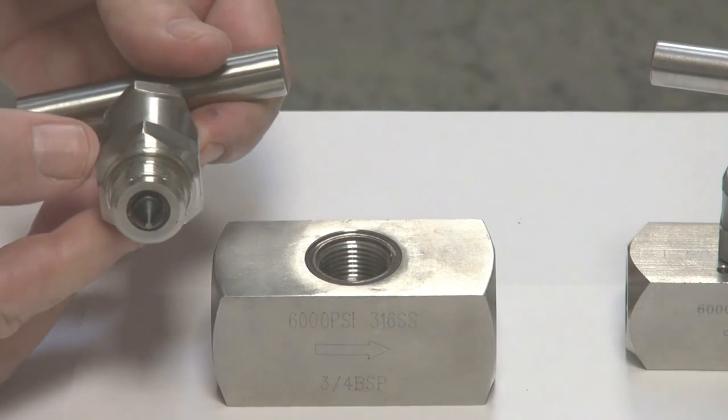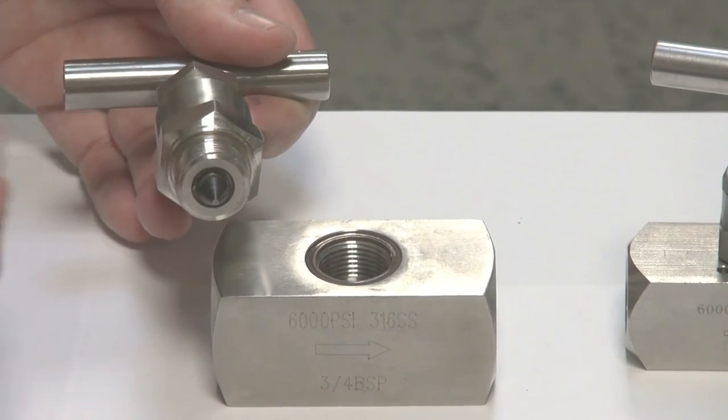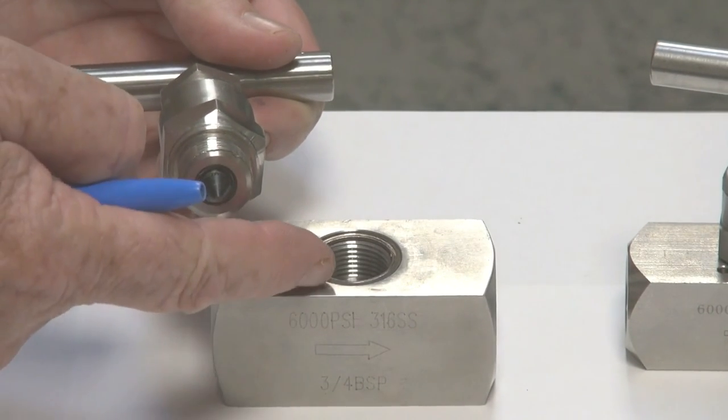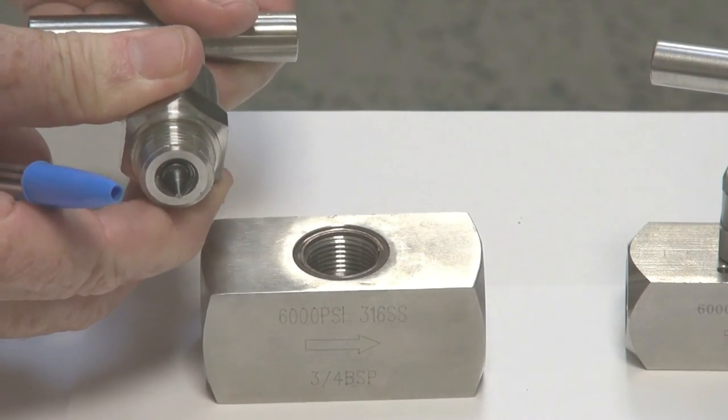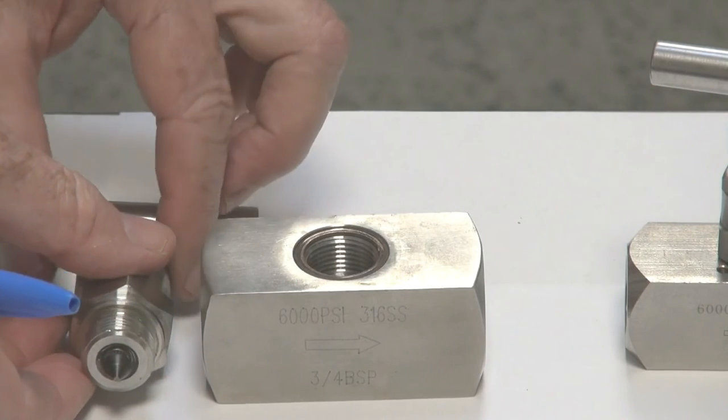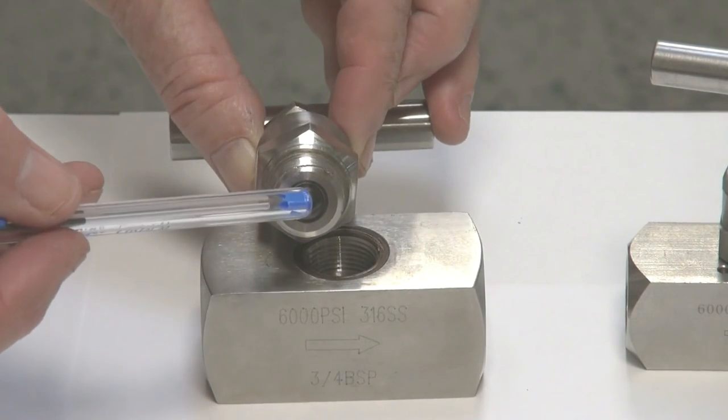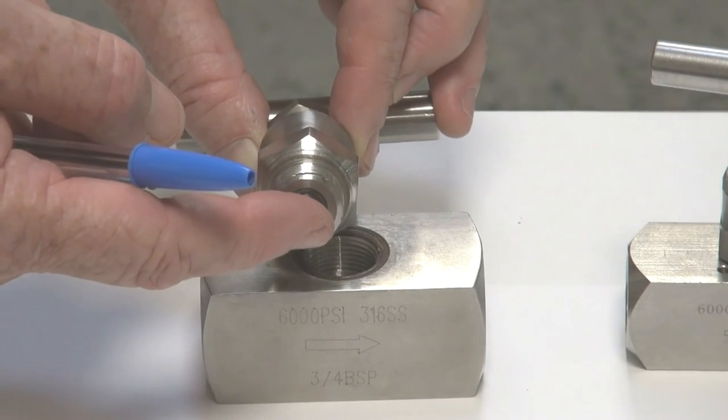The actual valve itself has this little thread on the top which screws into here. You wind the handle in and out, and it has the hardened seat. That seat itself can move.